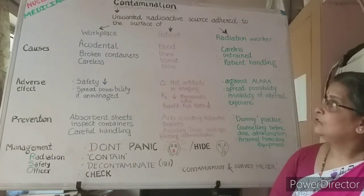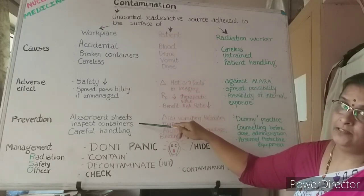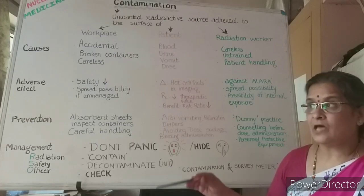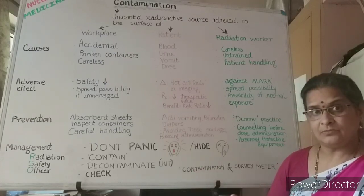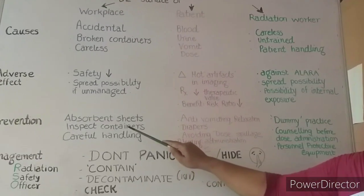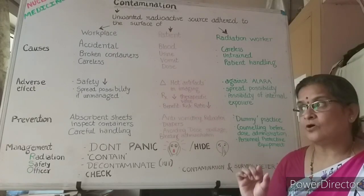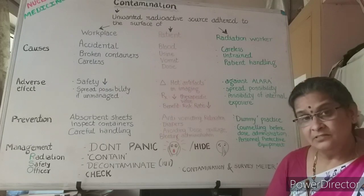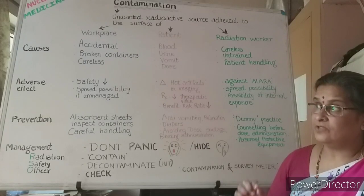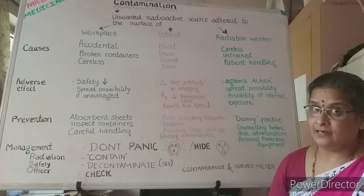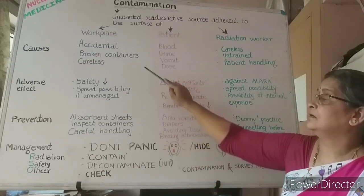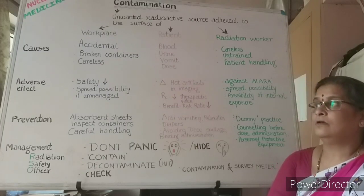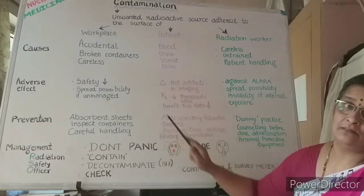For prevention, the counteraction of all causes serves as the preventive method. The workplace where you handle radioactivity should always be covered with absorbent sheets, and after work is over, remove them so any possible contamination is cleared. Containers such as syringes and needles should be inspected to ensure they are not leaky — the needle should tightly fit the syringe, and broken glass vials should not be used. Careful handling, however simple the procedure, is what will save you from radiation contamination.